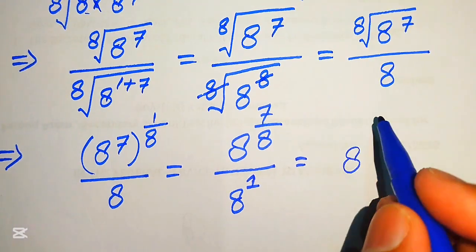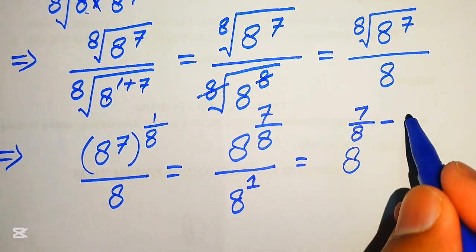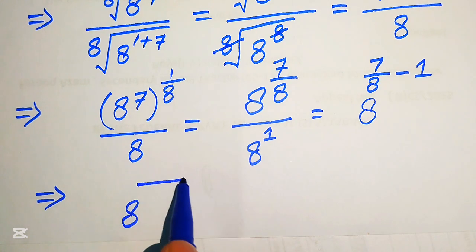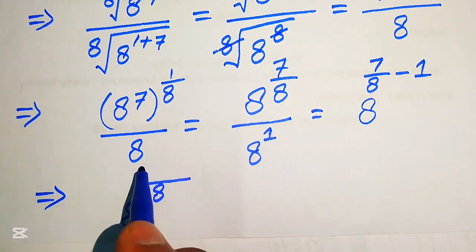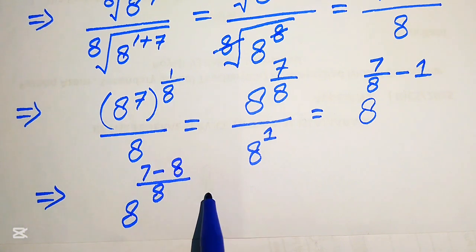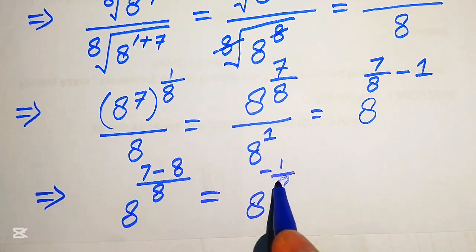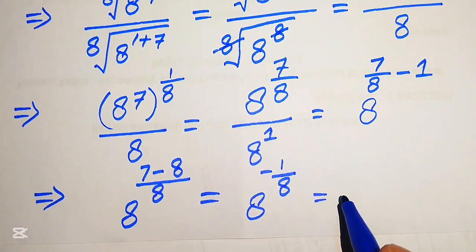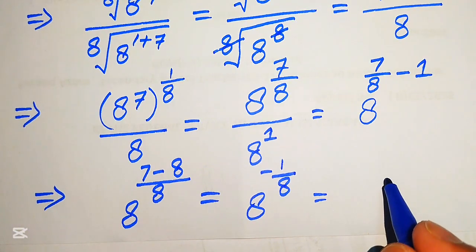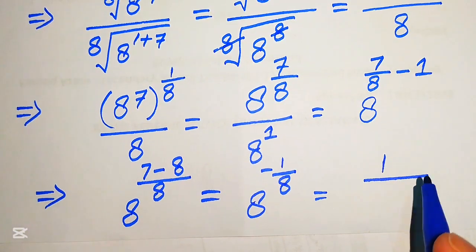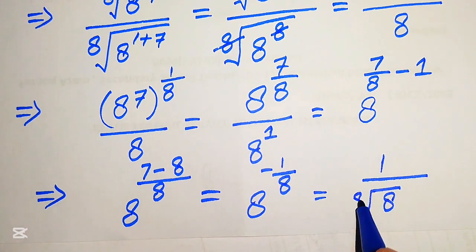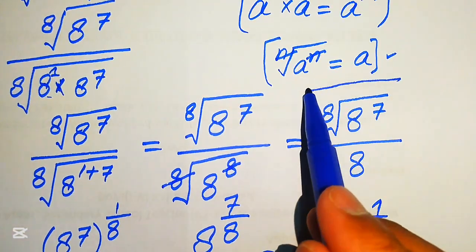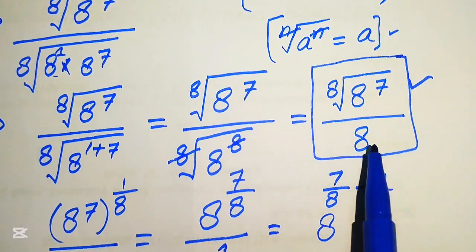In the denominator, the exponent of 8 is 1. Using the exponent law, we move it to the numerator, giving 8 to the power of 7 over 8 minus 1. Taking the LCM in the exponent with denominator 8, we get 7 minus 8, which equals 8 to the power of negative 1 over 8. So the final simplified form is 8 to the power of negative 1 over 8, which can also be written as 1 over the 8th root of 8.